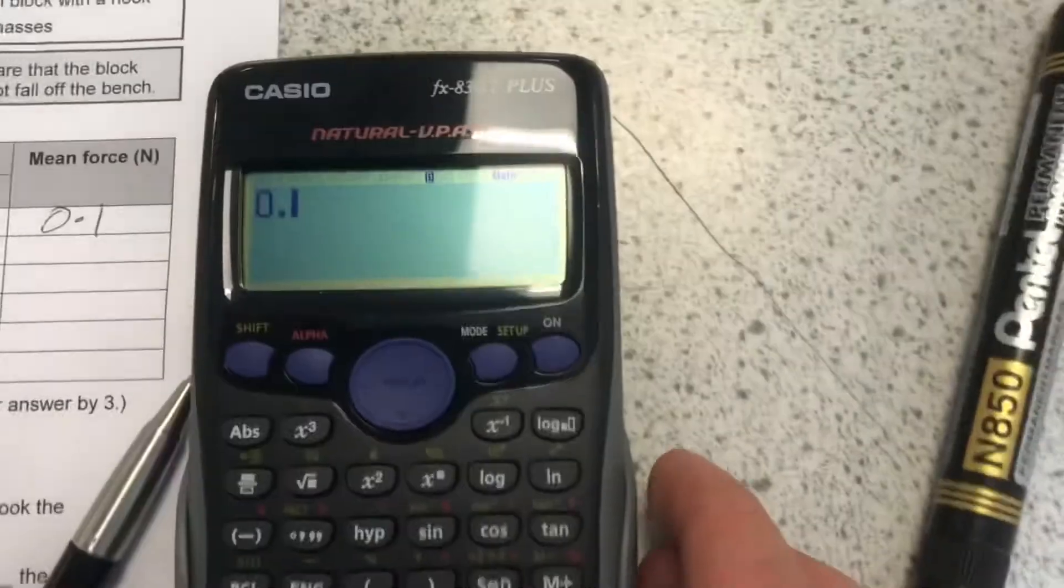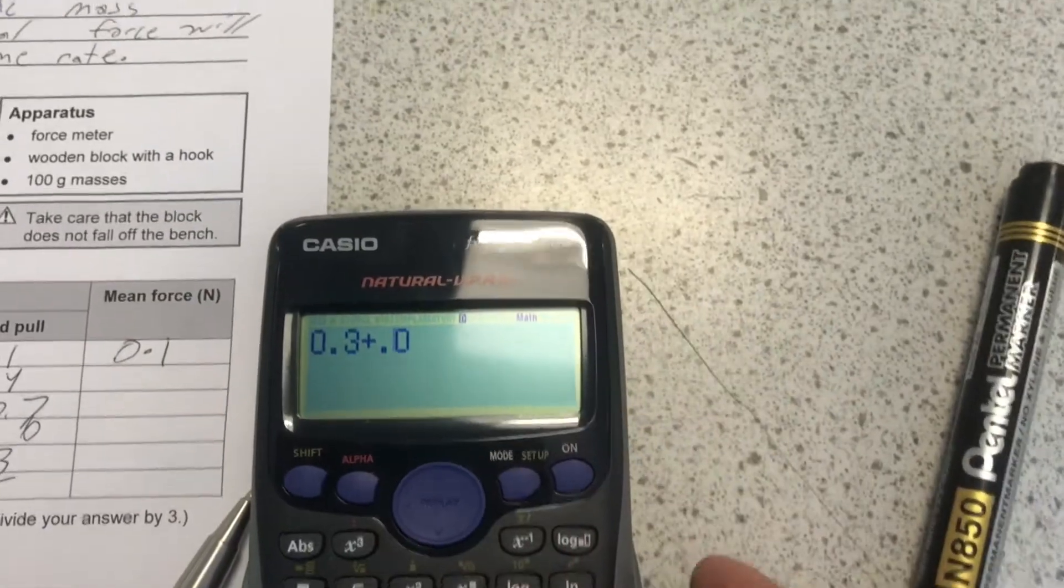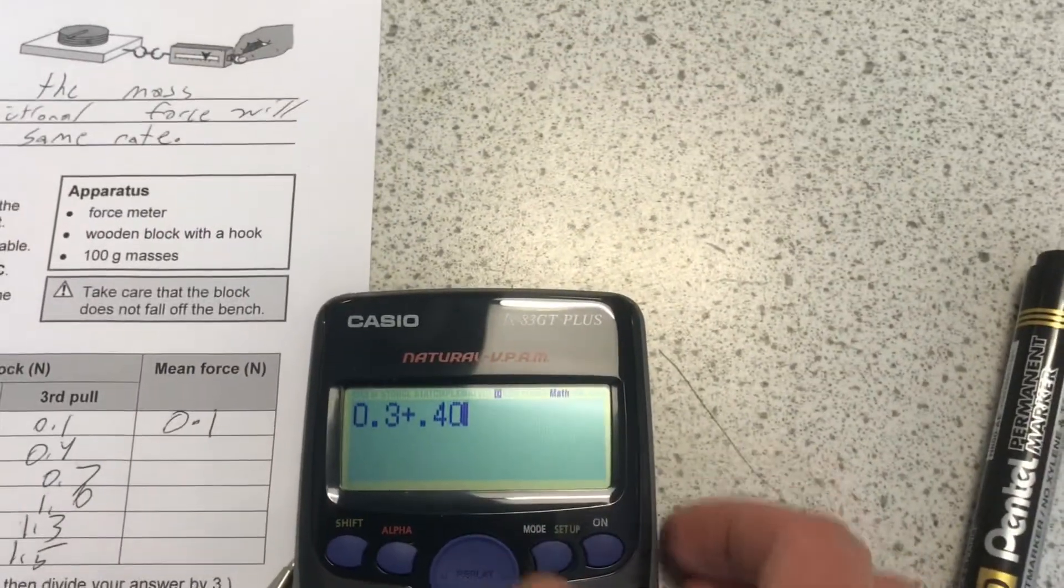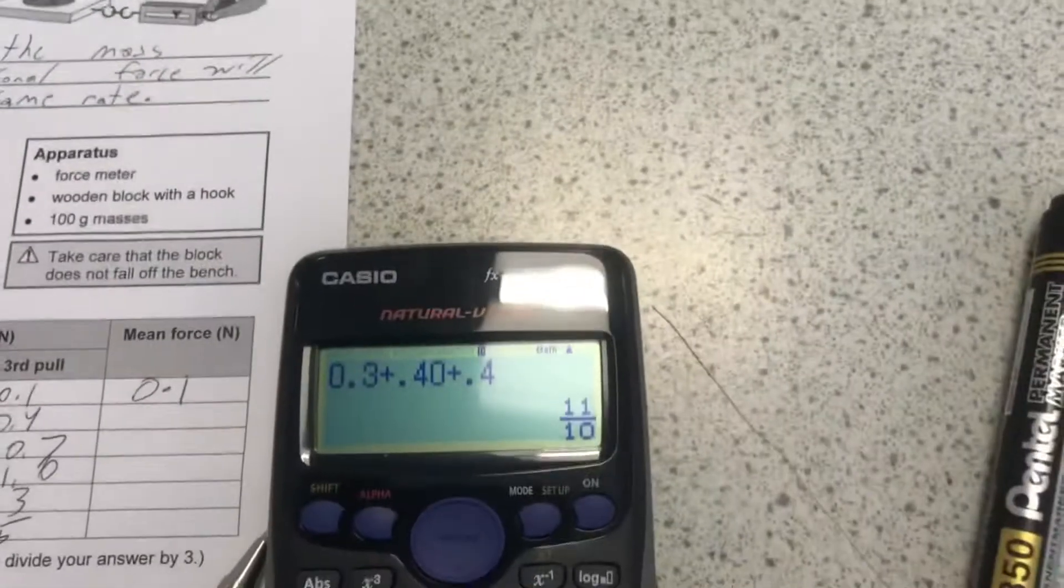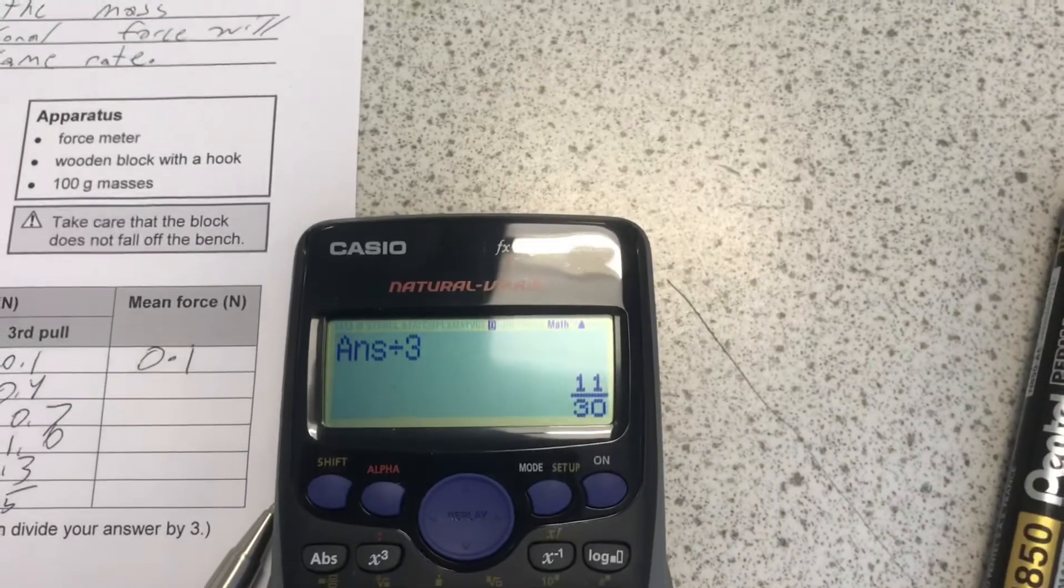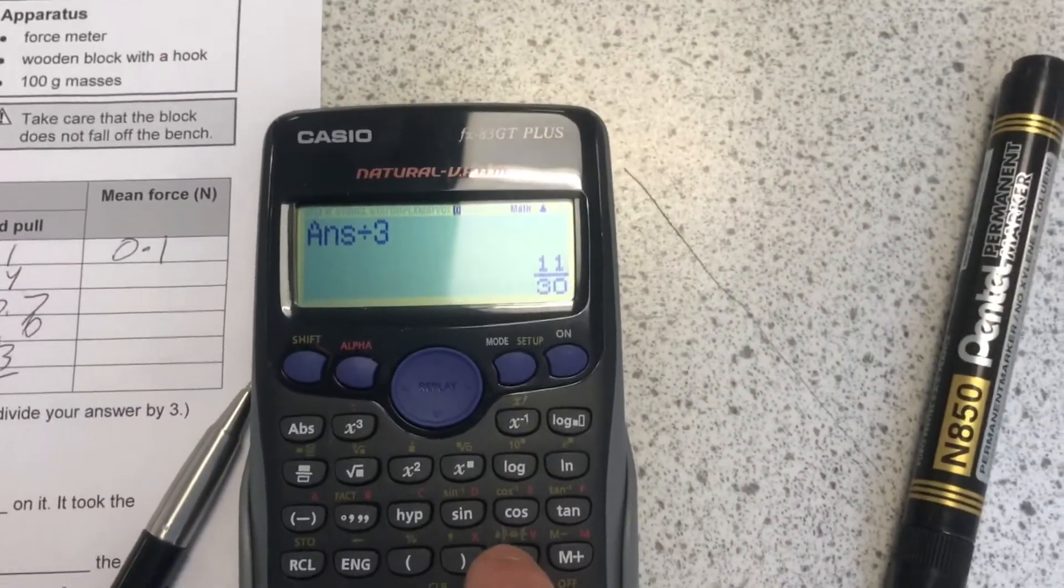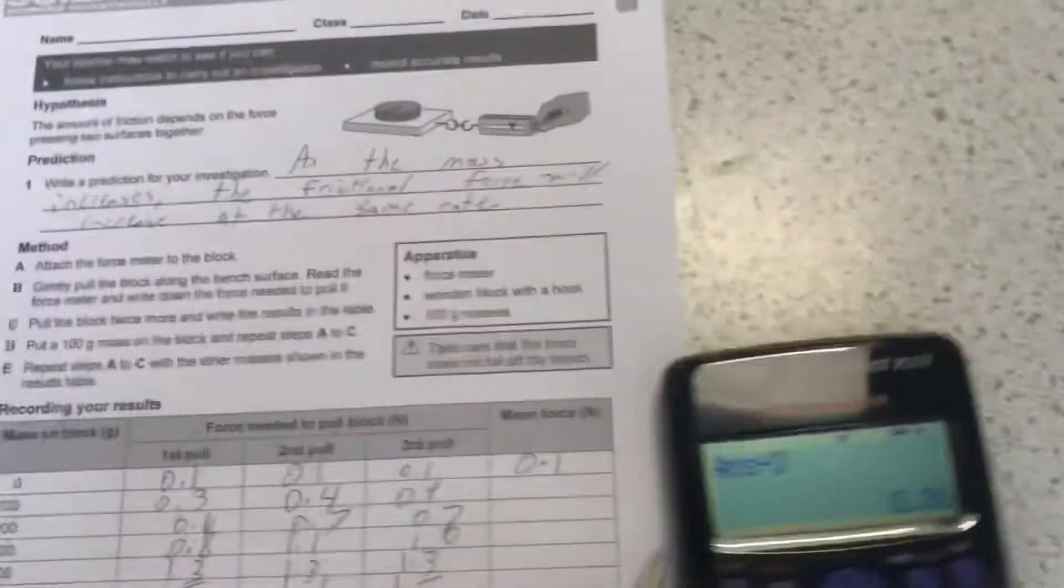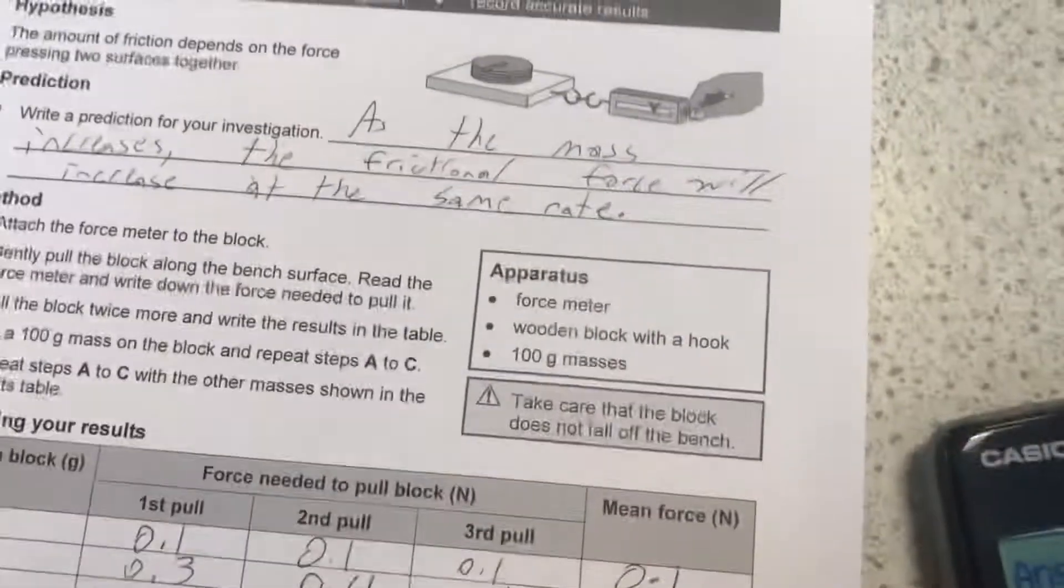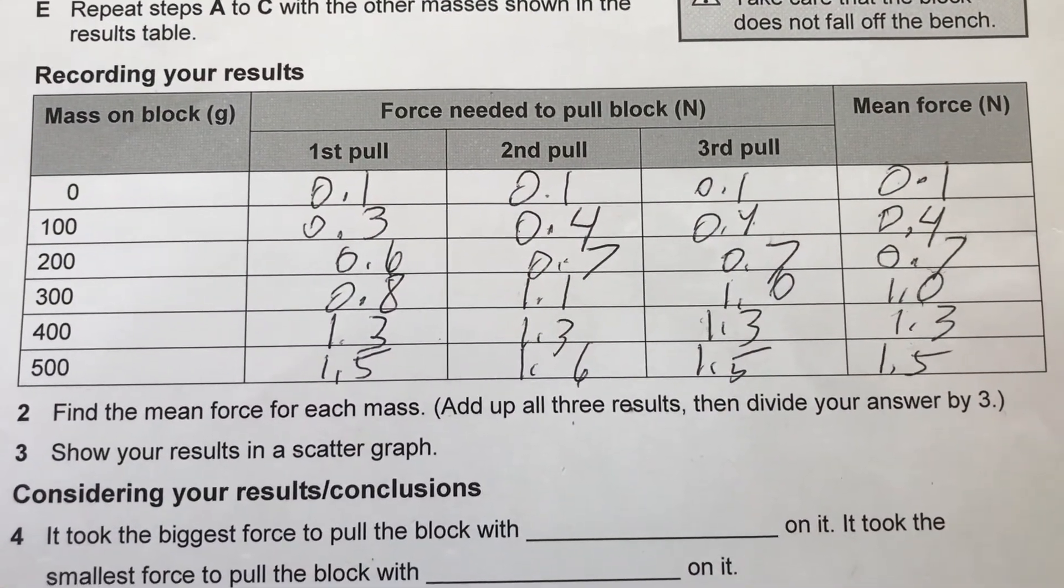So 0.3 plus 0.3 plus 0.4 plus 0.4 dividing our answer by 3. Once again we must press the button that says S to D to convert this to a decimal to get 0.36 recurring which rounds to 0.4 Newtons. Continue to calculate the mean for each mass.